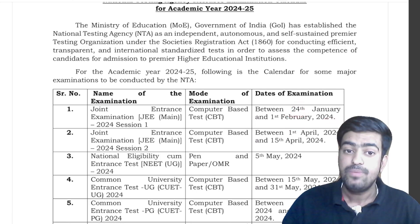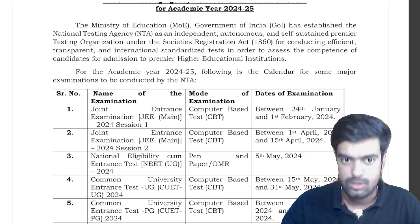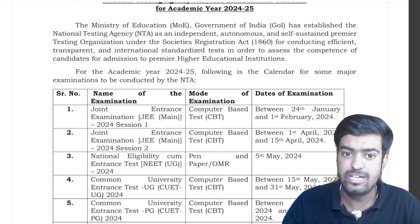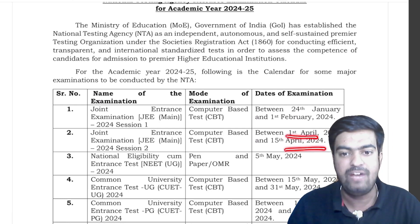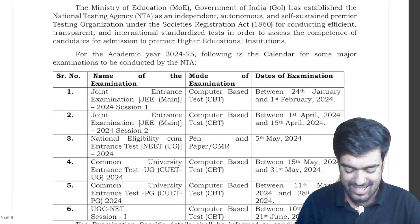JEE exam happens twice a year, so first session is in January which is 24th and 1st February. The second session of this particular exam will be held on 1st April and 15th April.